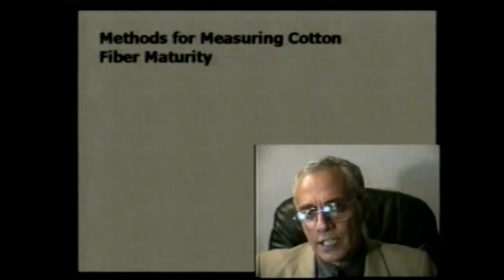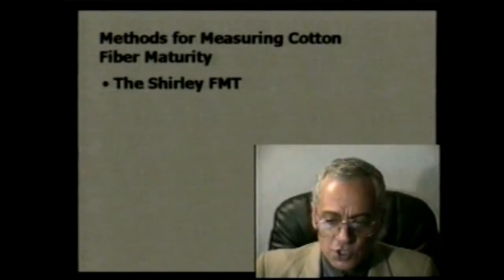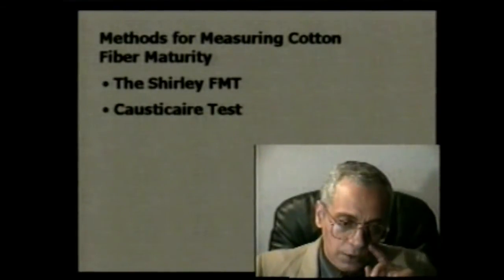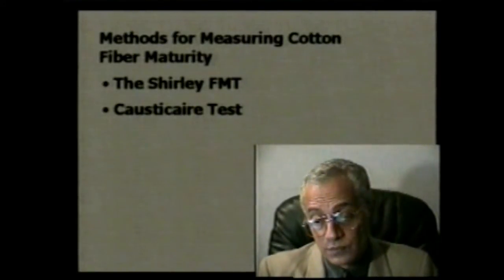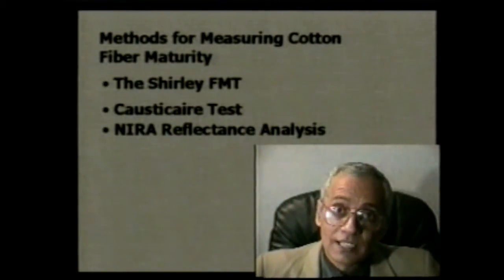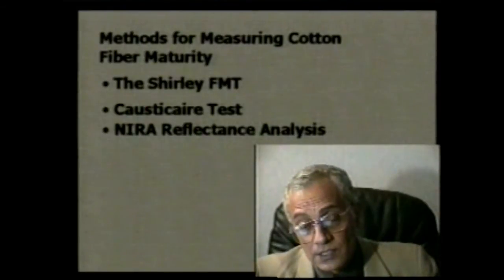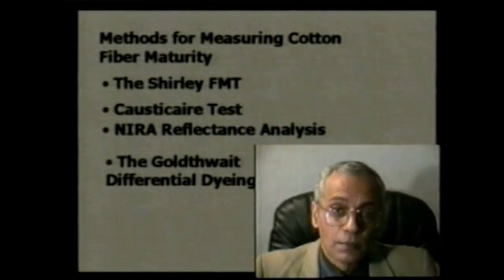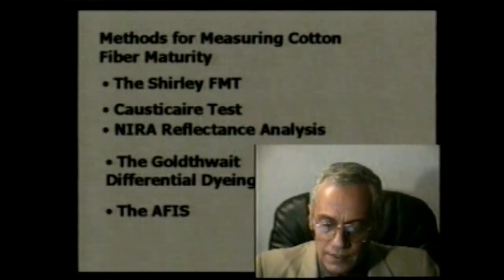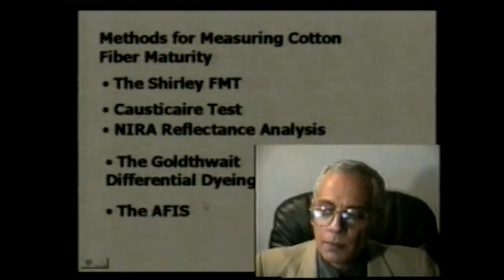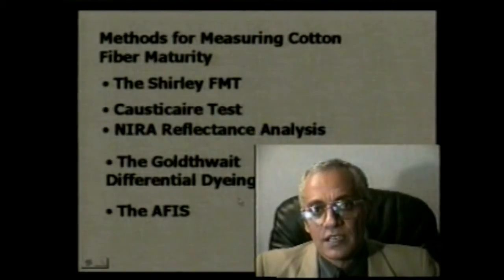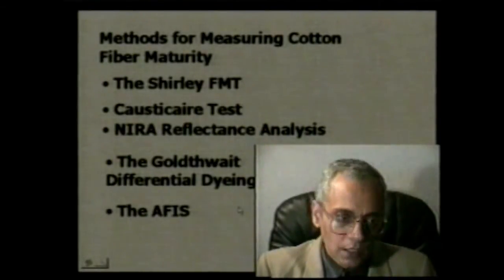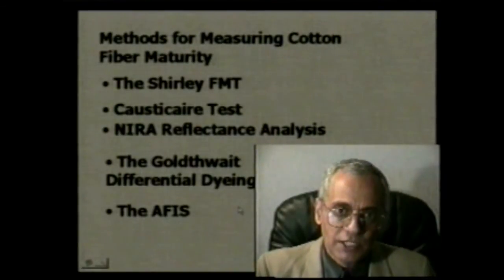The ASTM uses percentage values: above 85 percent is very mature; 80 to 85 is mature; 75 to 80 is below average; 70 to 75 is immature; and less than 70 is very immature. There are many methods available in the market today to measure fiber maturity: the Shirley FMT (Fiber Fineness and Maturity Tester), the caustic air test, NIRA reflectance analysis, commercial systems like the Analyzer 400, gold weight differential dyeing, and AFIS. The existence of so many methods indicates we still do not have a universal standard method for fiber maturity.